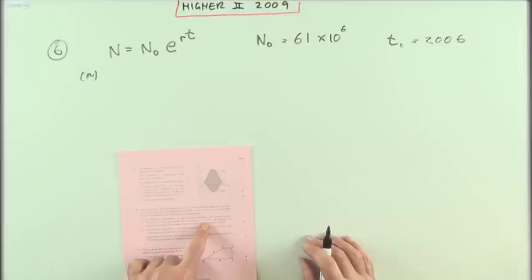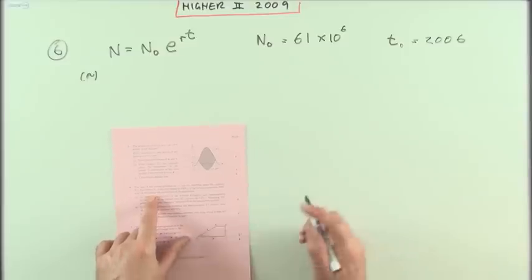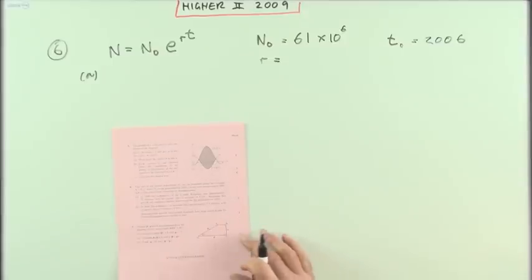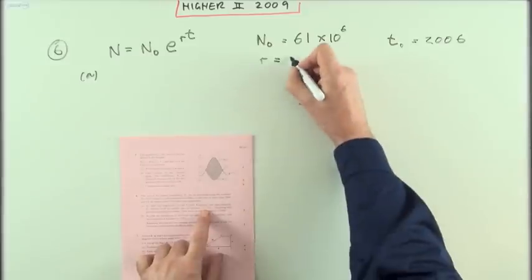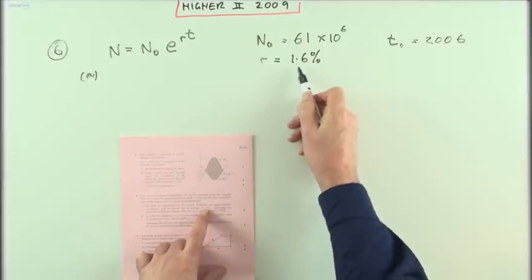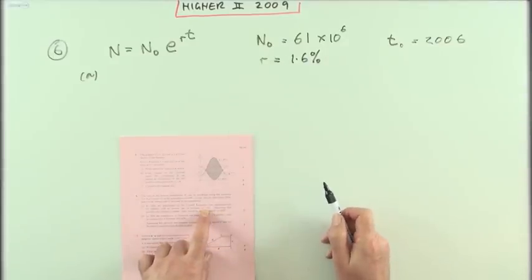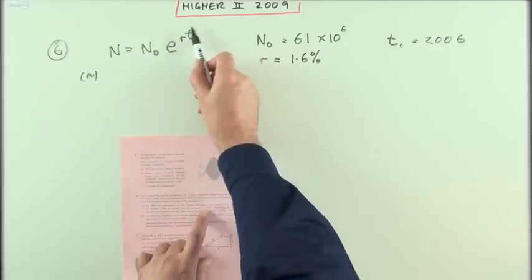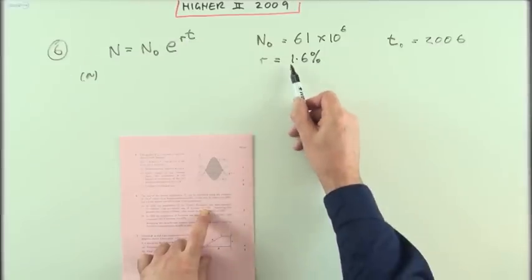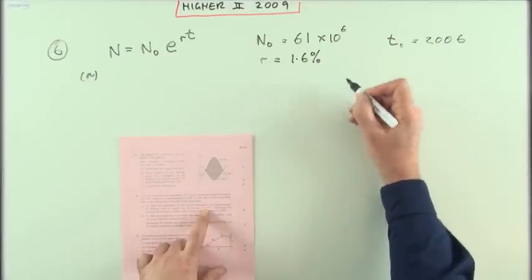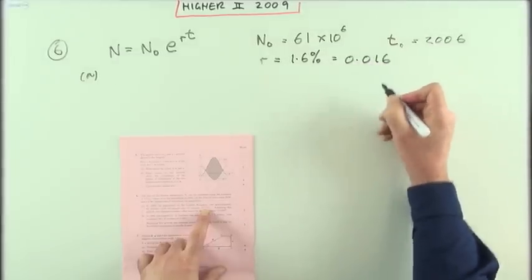Now with an annual rate of increase that'll be the R because it says R is the annual rate of increase. So I should take a note of that as well. Now it's expressed as a percentage, 1.6%. That's just one of the outfits a fraction can wear. I want the fraction to be a decimal to put it into this index form. So 1.6% simply means 1.6 divided by 100 which is 0.016.